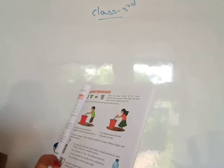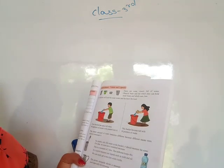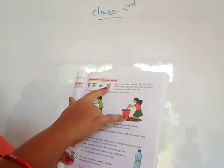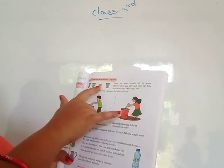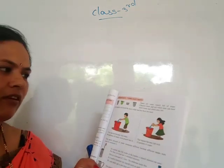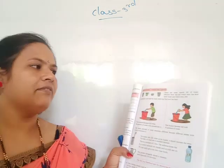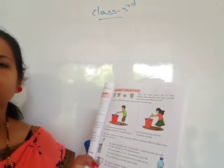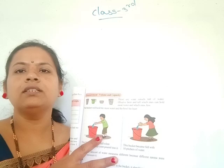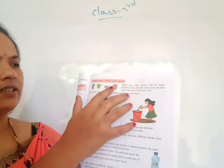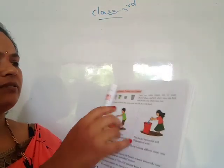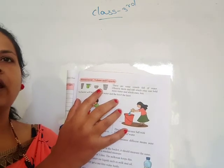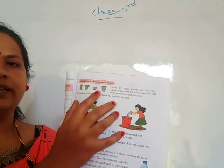These are some vessels full of water — see this picture here. There are different types of vessels, and all these vessels are full of water. Observe them and tell which ones can hold more water and which ones can hold less water.